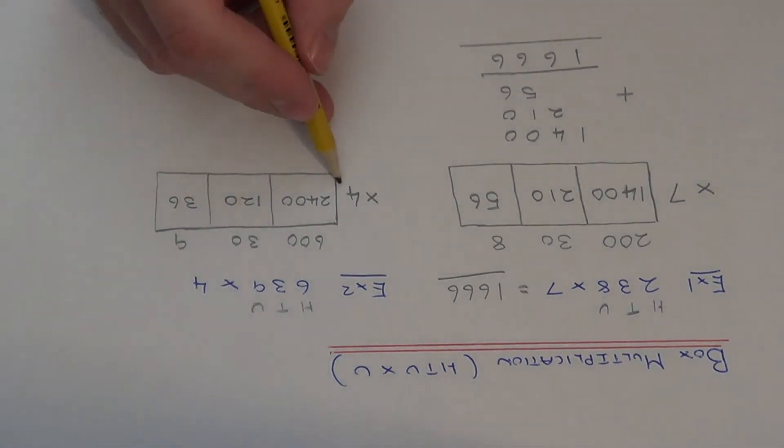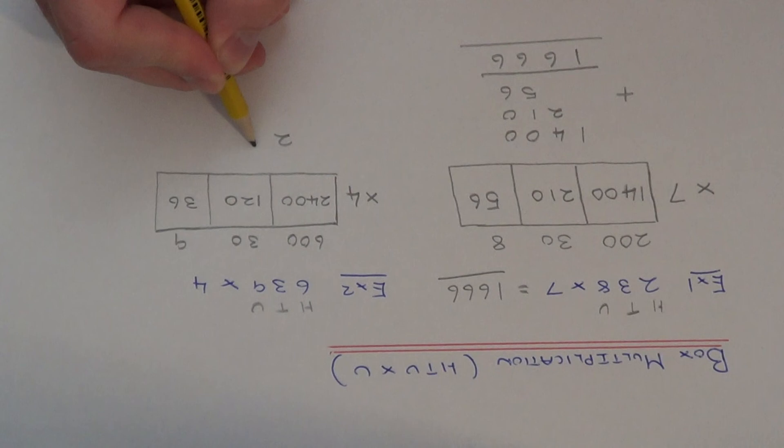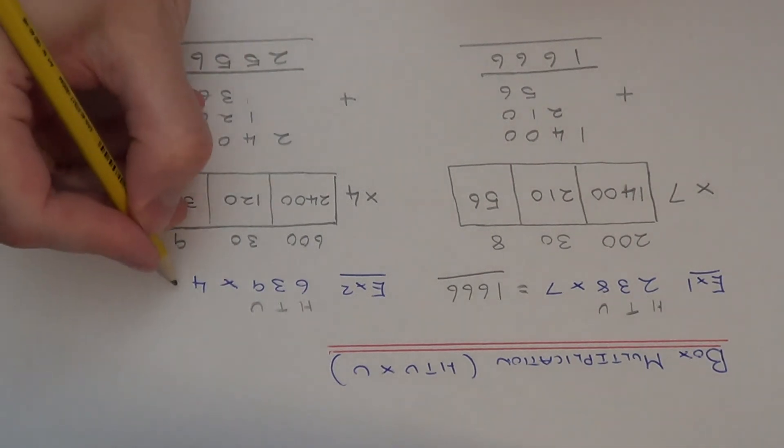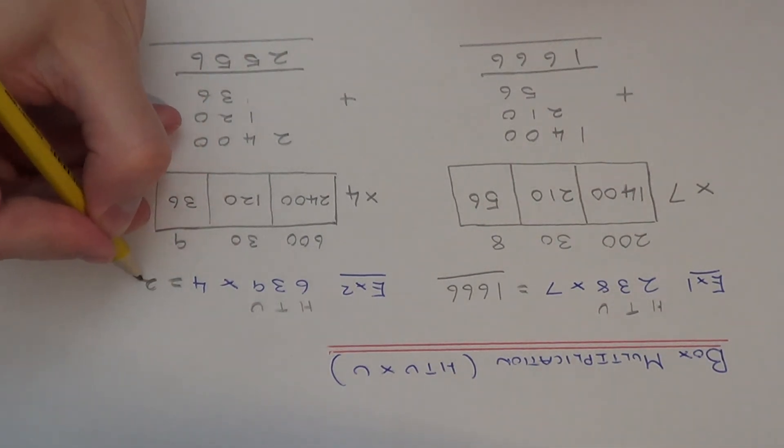Finally we just need to add these three numbers up. So that's 6, 5, 5 and 2. Our final answer is 2556.